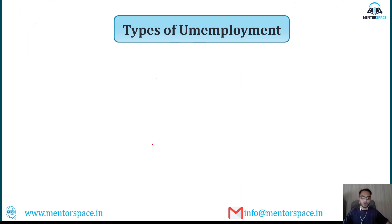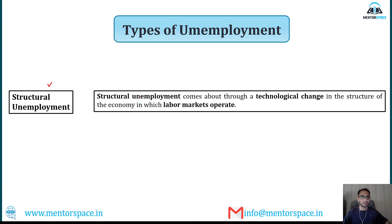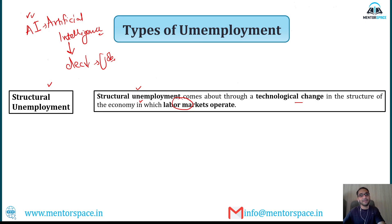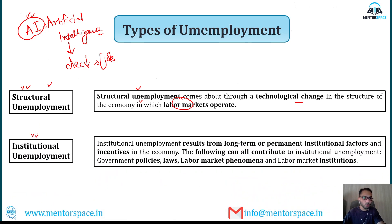Structural unemployment comes about through technological change in the structure of the economy in which labor markets operate. For example, if Artificial Intelligence is fully implemented in an economy, it will lead to a decrease in jobs because AI will take over the work of many employed people. This technological advancement leading to unemployment is known as structural unemployment.